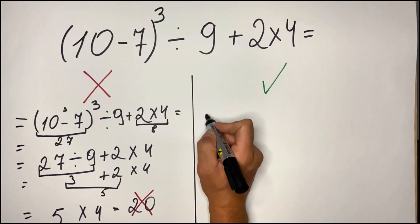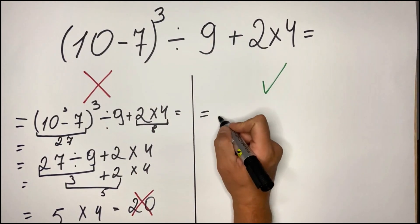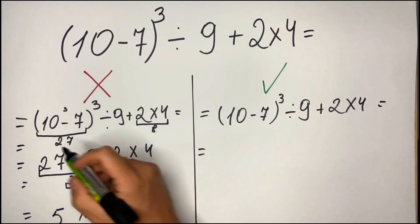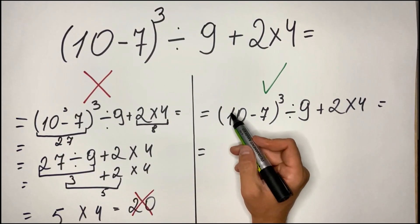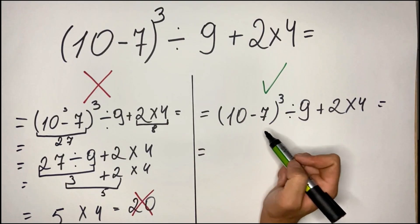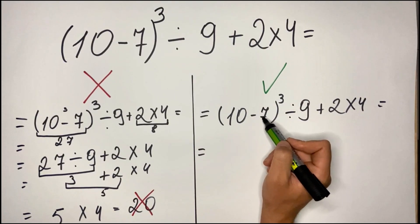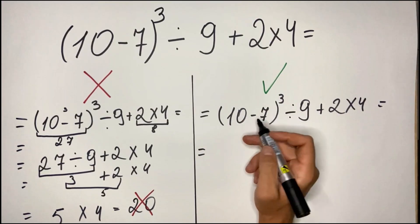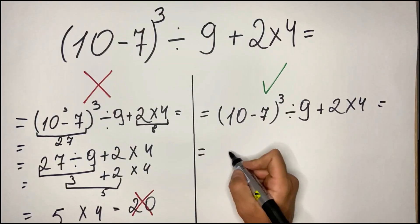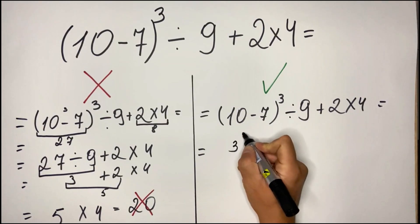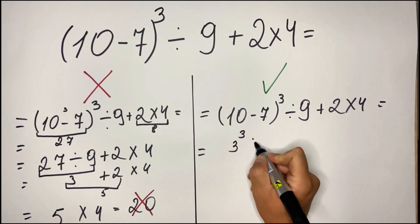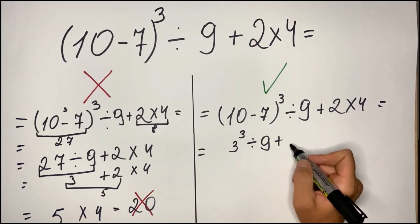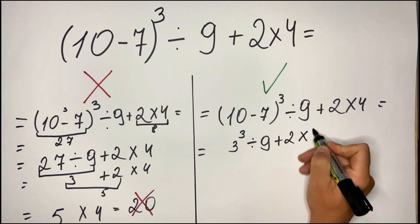So how should everything be done? So first let me just copy and we'll go with the correct way. So first, of course, we do whatever is in parentheses. It can be even whatever operation is in parentheses, we do what's in it. In this case we have the subtraction, so we have (10-7)³ divided by 9 plus 2 multiplied by 4.